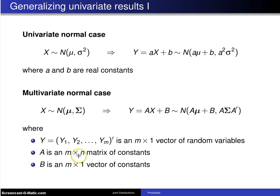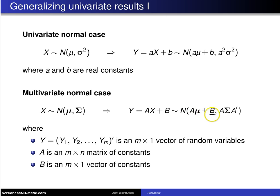More specifically, A is an n by n matrix of constants, and b is an n by 1 vector of constants. Then y, which is an n by 1 vector of random variables, has the normal distribution with mean vector A-mu plus b, and variance-covariance matrix A sigma A-transpose, which will be an n by n variance-covariance matrix.